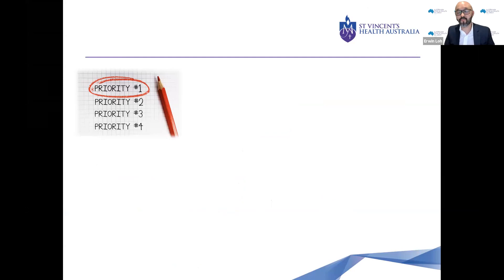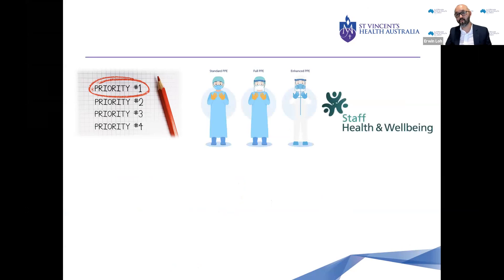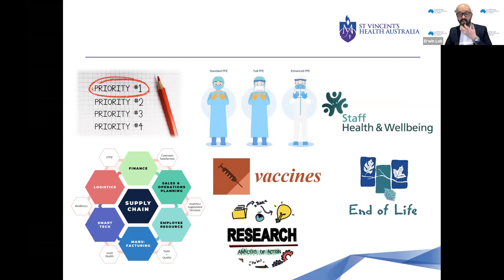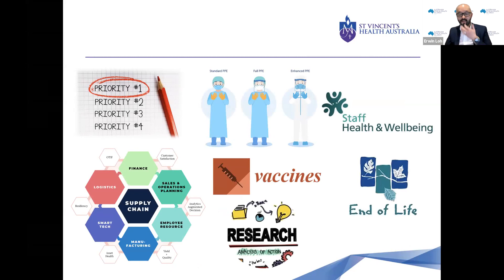From my point of view, there are six areas of ethical consideration for organisations during a pandemic, which then filter down to individuals: prioritisation; how we manage PPE; staff health and wellbeing — and by the way, all of these issues overlap and are related; the supply chain and how we manage that; vaccines, which is related to all of the above; research in COVID-19; and last but not least, how we manage end of life.